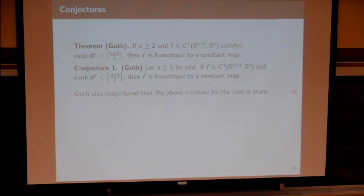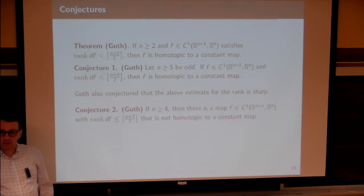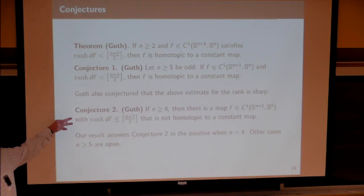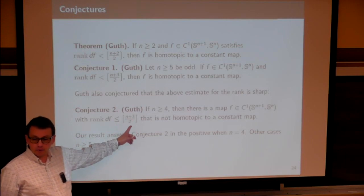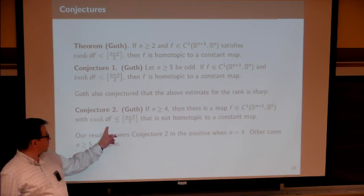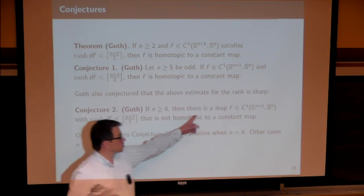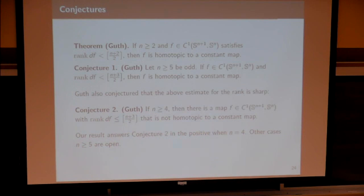Our example gives the answer when n = 4: since ⌊(4+3)/2⌋ = 3, we have a C¹ mapping from S⁵ to S⁴ with rank ≤ 3 not homotopic to a constant. This confirms the sharpness of Guth's conjecture for that case. In other dimensions this question remains open.